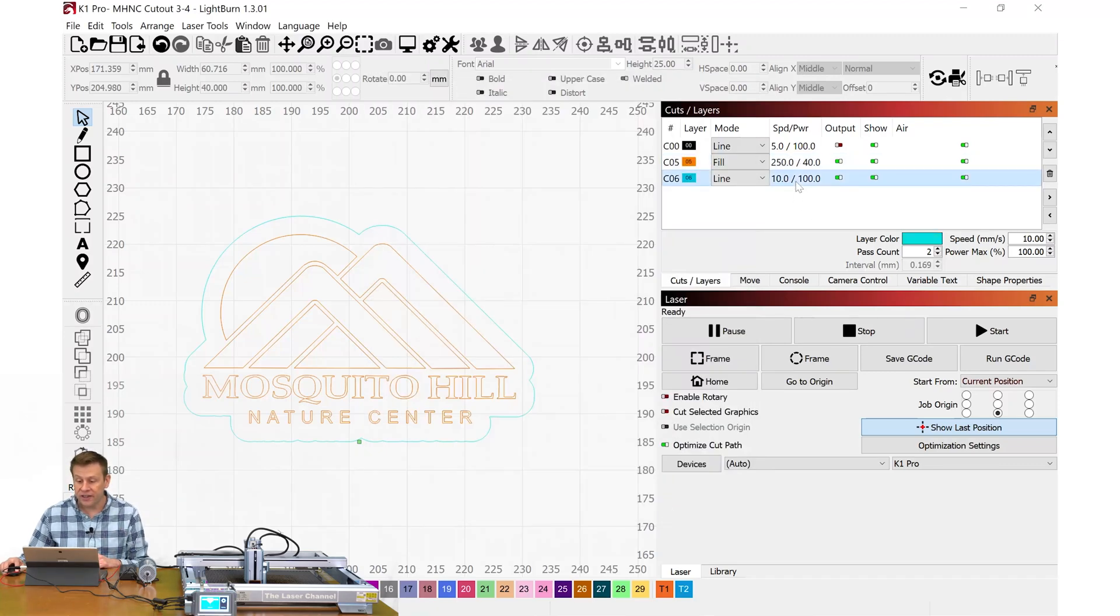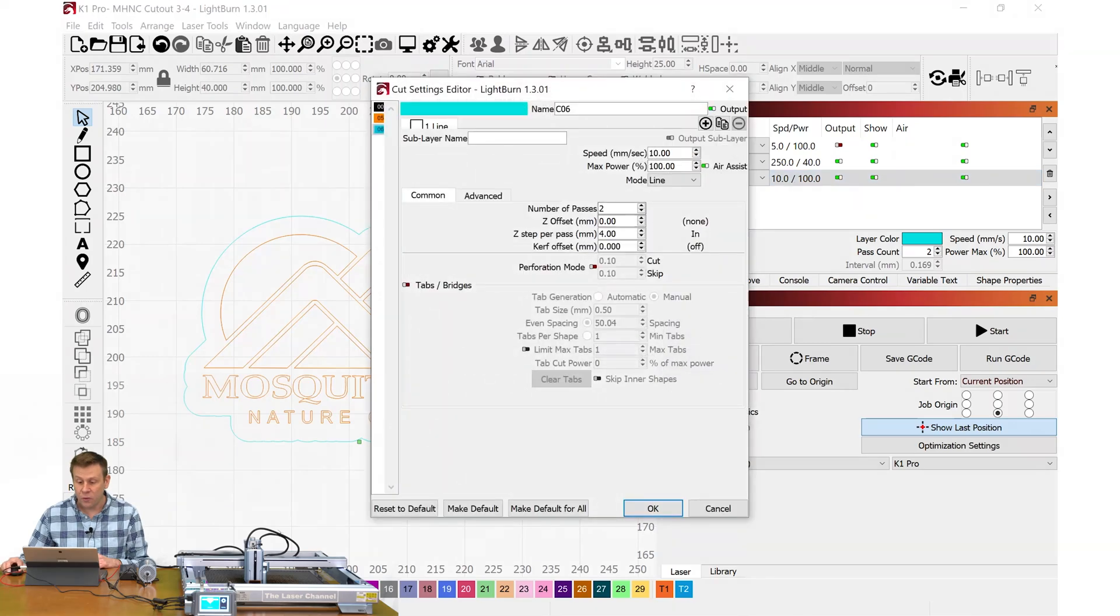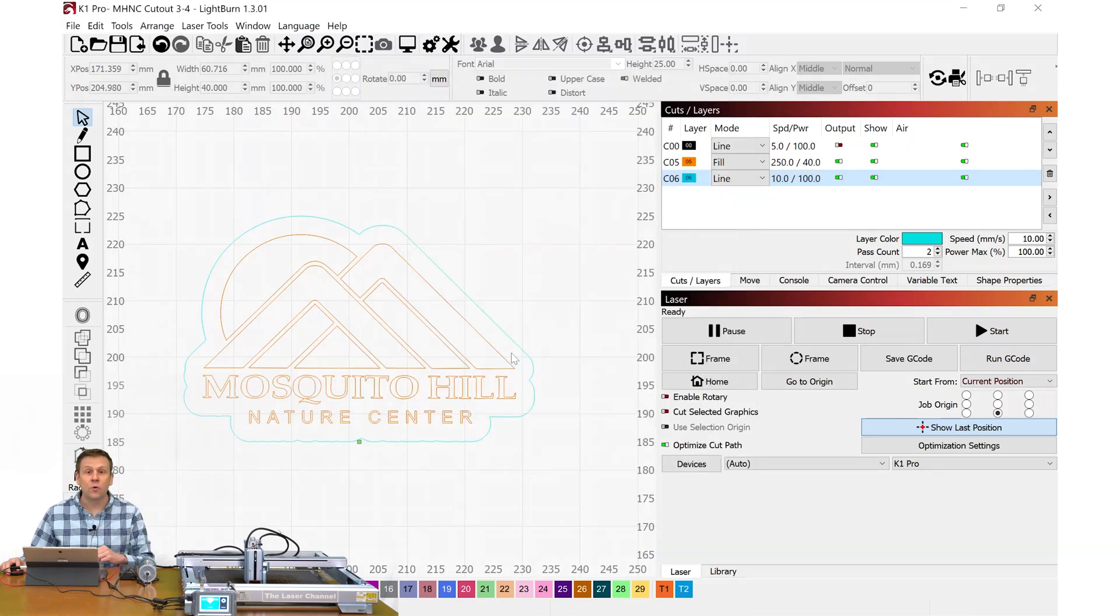We just checked out this menu here with the number of passes. I am doing a speed of 10 millimeters per second, so that is actually moving along pretty good, and I'm running a max power of 100%. I'm going to get some work material into the machine and set the autofocus, and we'll be ready to start this first cutout in just a second.